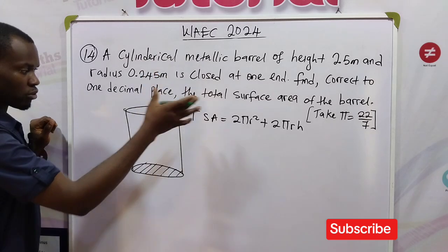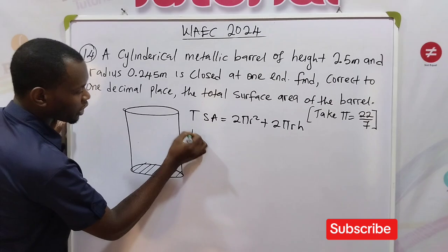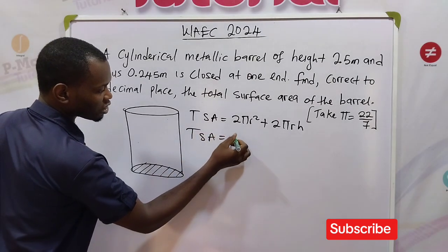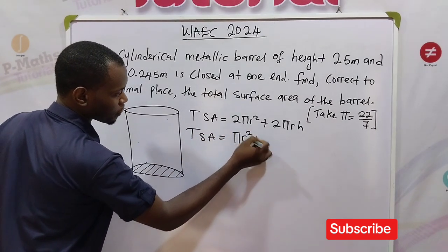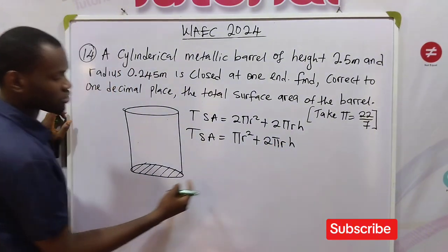But since the top is open, there is no area on the top of the cylindrical barrel. So we are going to be using the formula considering πr² + 2πrh.